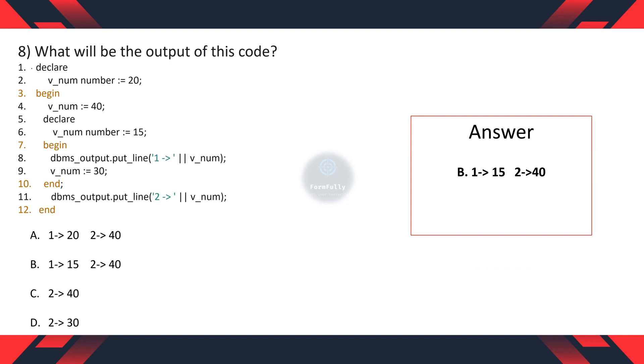Because if you see here, there are two blocks of code. One is this and one is this. In first outer declare section, vnum is assigned with 20. After that in begin section, vnum is replaced with 40. But in inner declare section, vnum is again replaced with 15. So in this print statement, vnum would be 15.